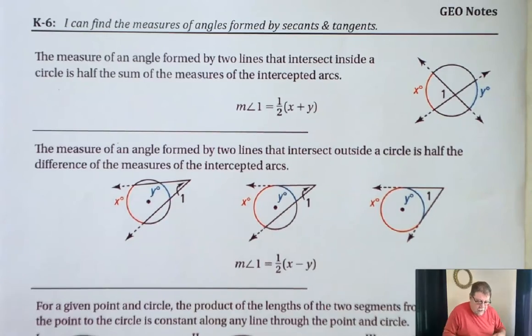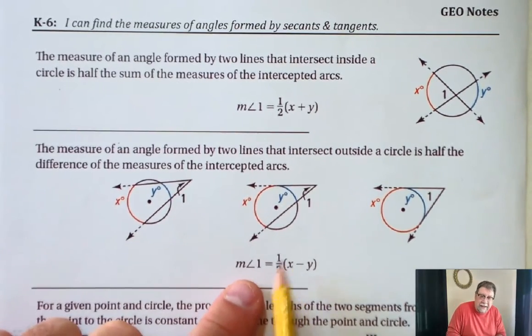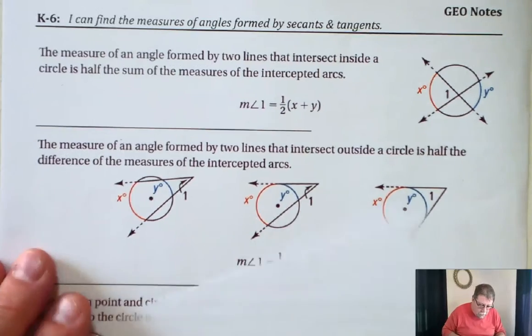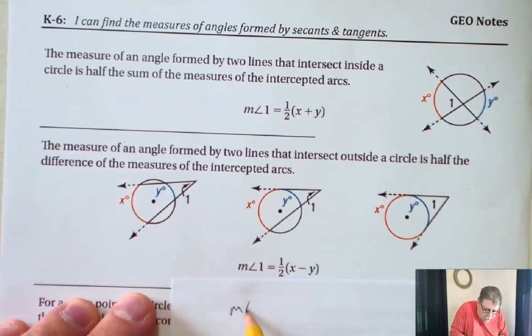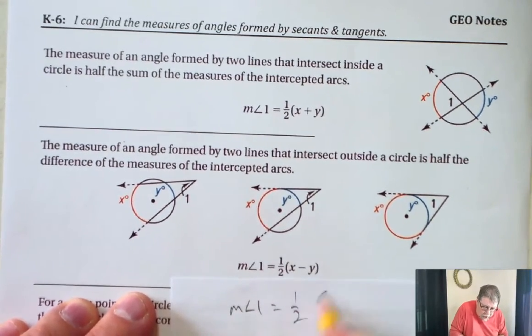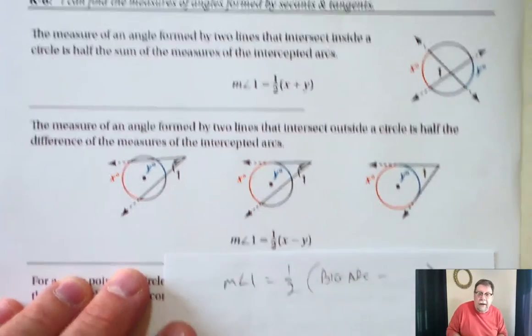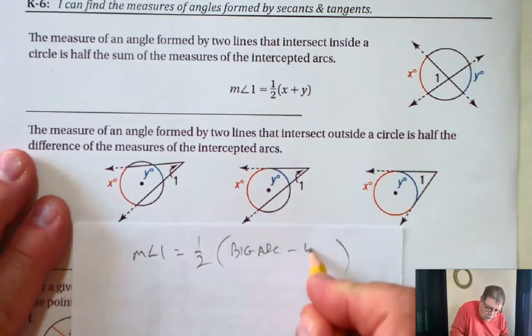I like to think of this as, I don't really like this formula as much as some people do. I like to think of this formula more of the measure of angle one is equal to one half the big arc minus the little arc.